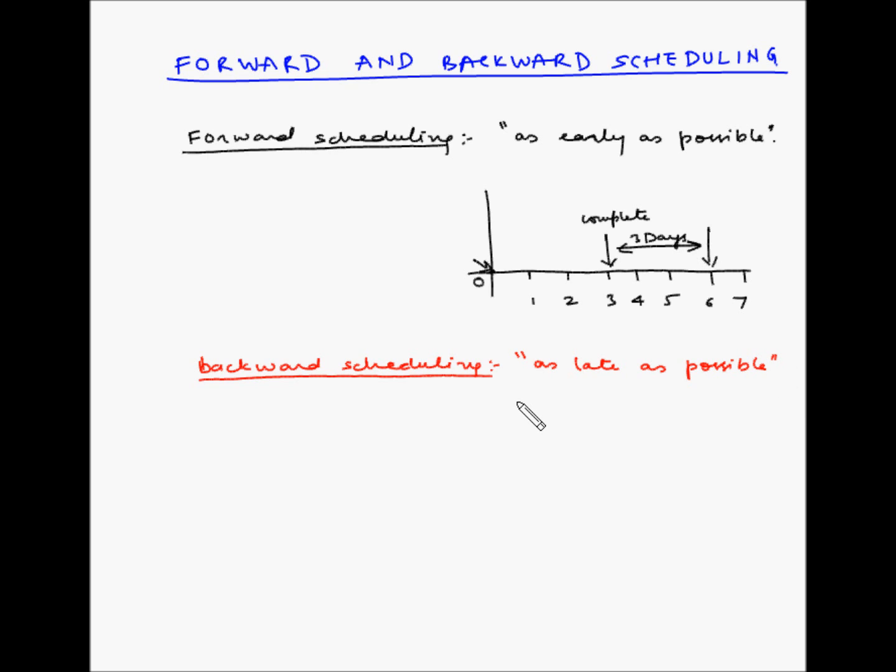So let us consider the same case that we have a job which needs to be delivered on day 6. And it takes 3 days to process this job. So let me again draw a time scale. 1, 2, 3, 4, 5, 6 and 7. So 6th day is the day when we have to deliver the job to the customer. And we are currently on day 0.